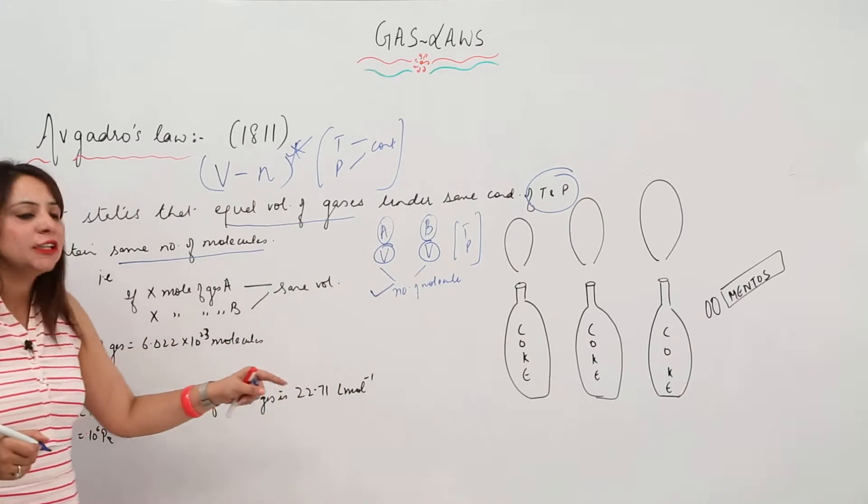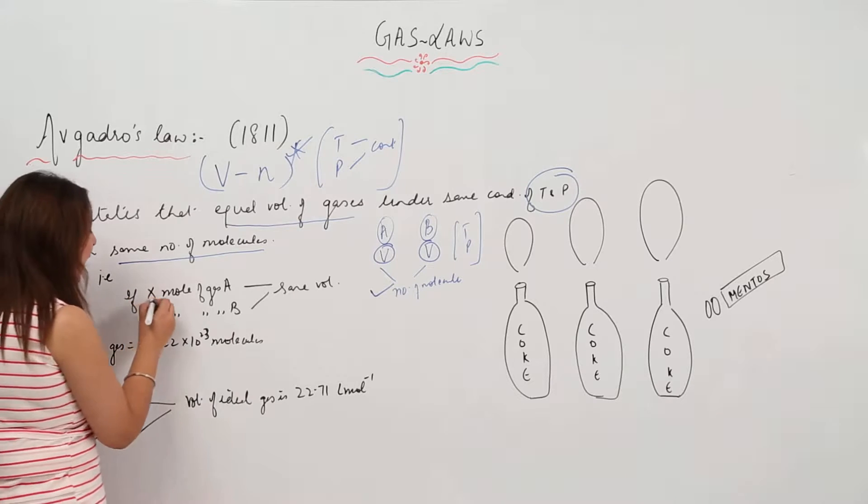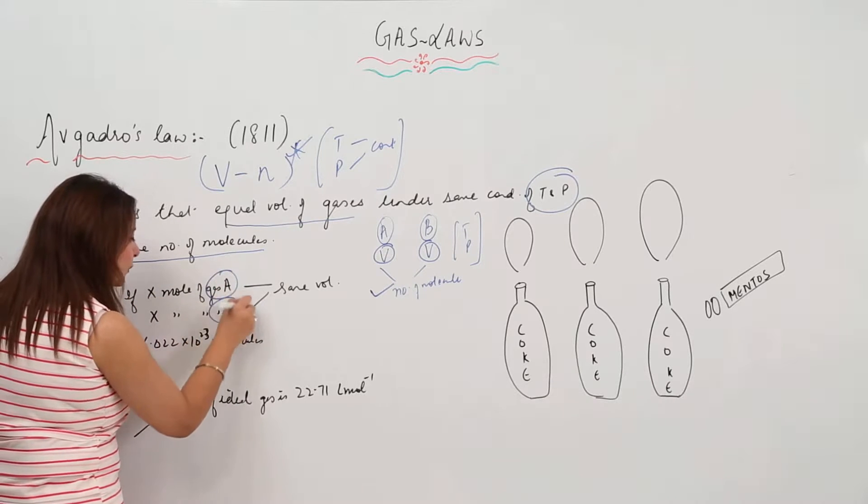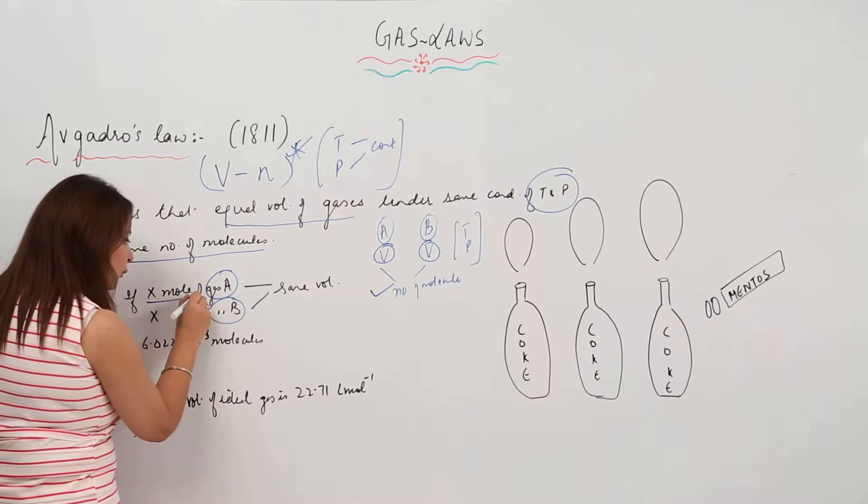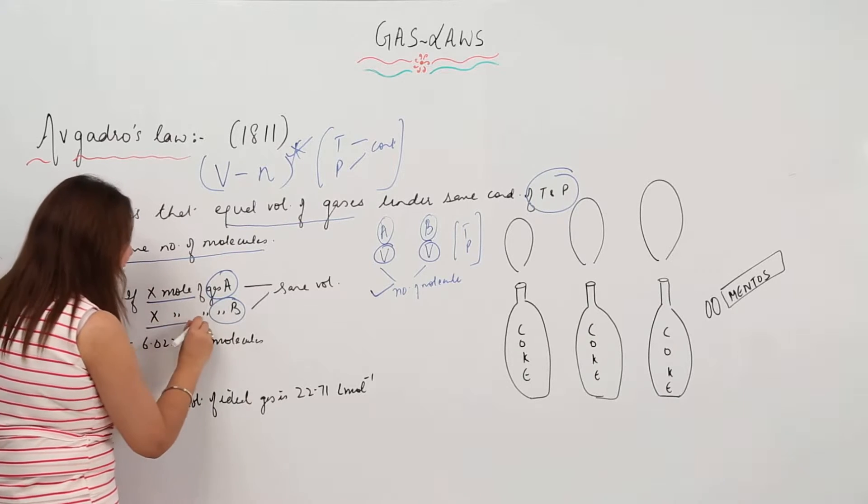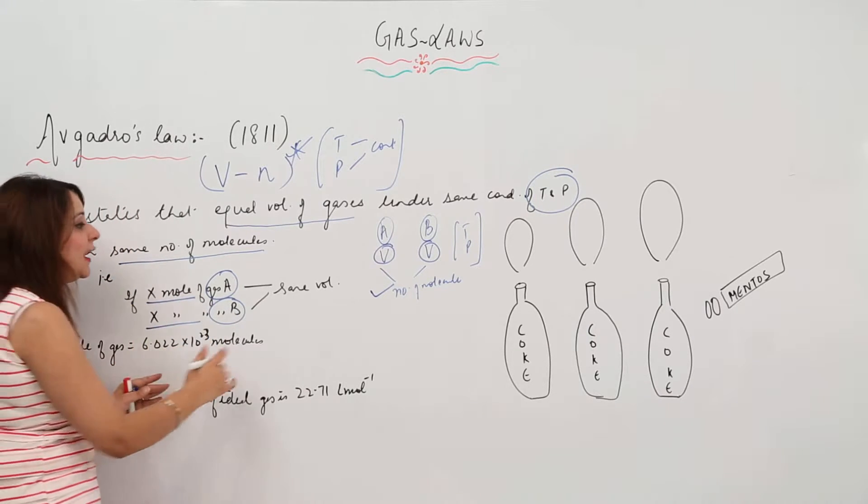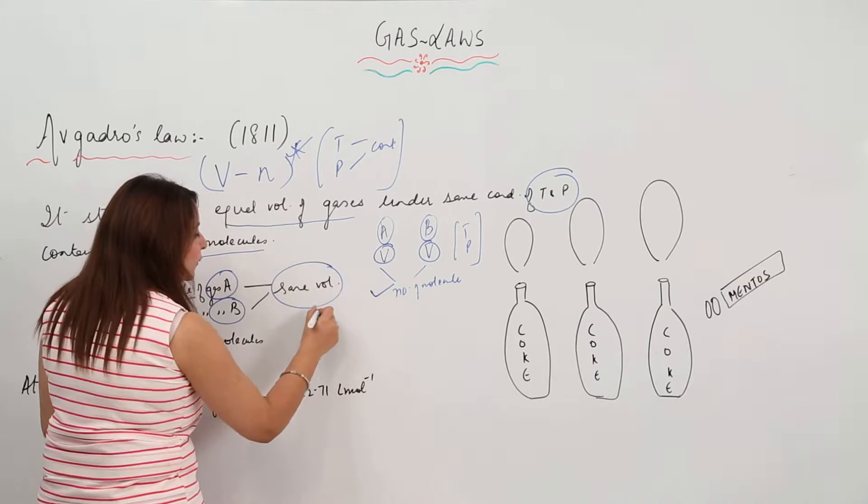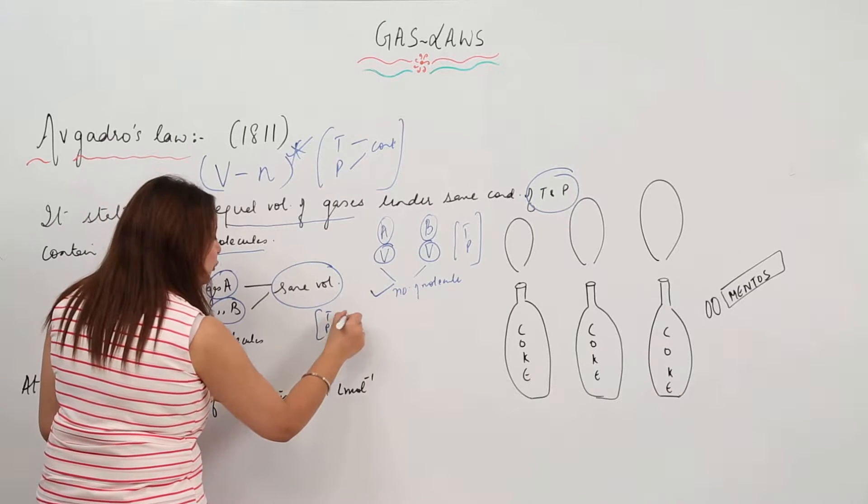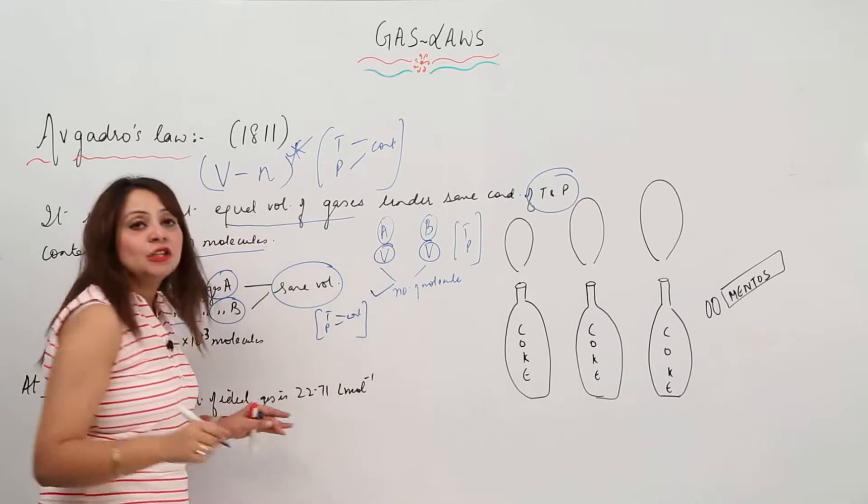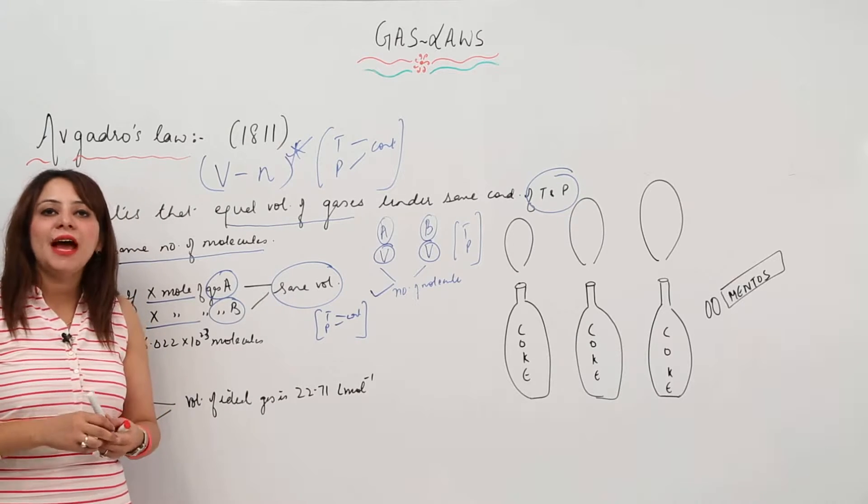Let's take the number of molecules in terms of moles. Suppose gas A has X moles and gas B has the same X moles - they will actually occupy the same volume, provided temperature and pressure remain constant.